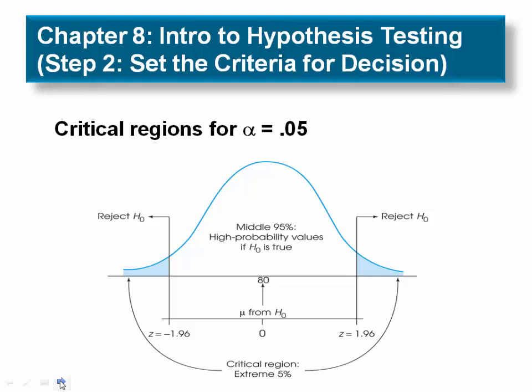To determine the exact location for the boundaries that define the critical region, we will use the alpha level probability and the unit normal table. In most cases, the distribution of sample means is normal, and the unit normal table will provide the precise z-score location for the critical region boundaries. With an alpha equals .05, for example, the boundaries separate the extreme 5% from the middle 95%. For a null hypothesis, we split that 5% equally between the two tails of the distribution, so that there is exactly 2.5% or .0250 in each tail.